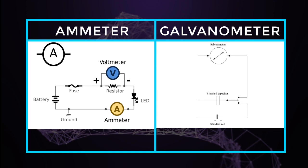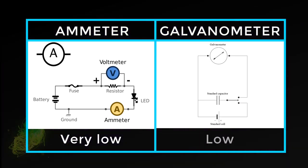The effective resistance of ammeter is very low. The effective resistance of galvanometer is low.